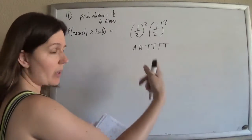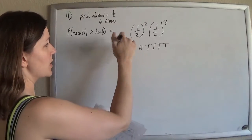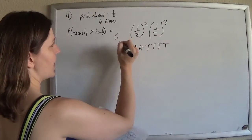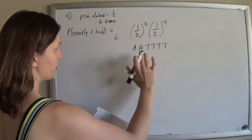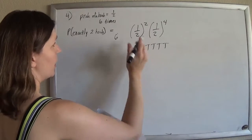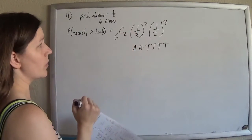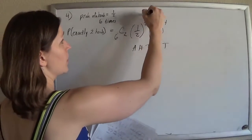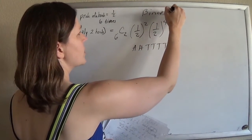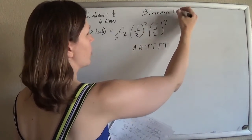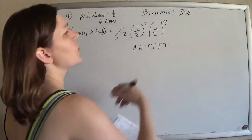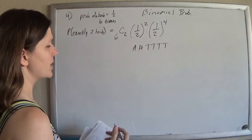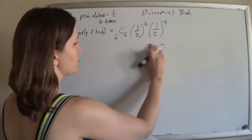But I don't care what order I get the heads in, so I need to multiply by the number of combinations. So there are six times I'm flipping, and I want to choose two of those to be heads. So this is your binomial theorem — or binomial probability. The ones they choose on this worksheet are kind of boring because both of those are halves, but it does still work.